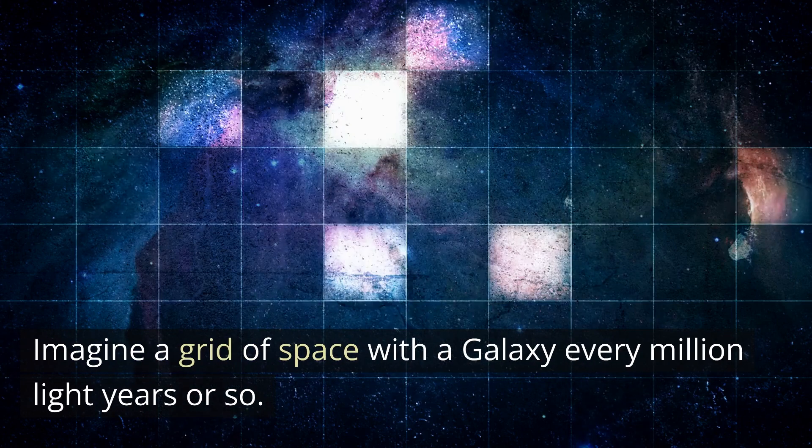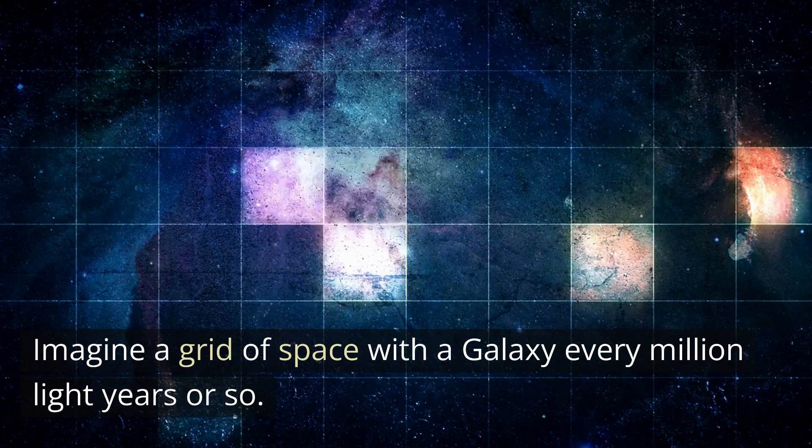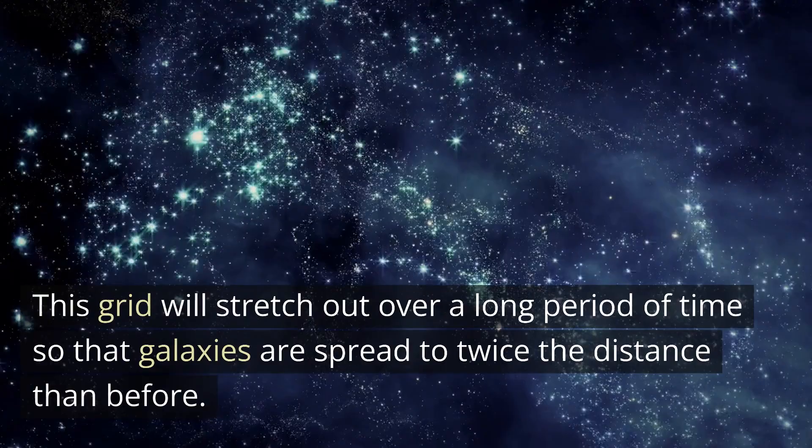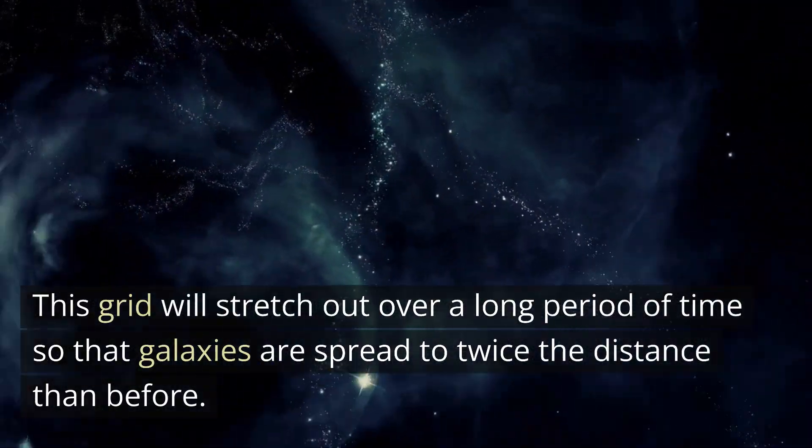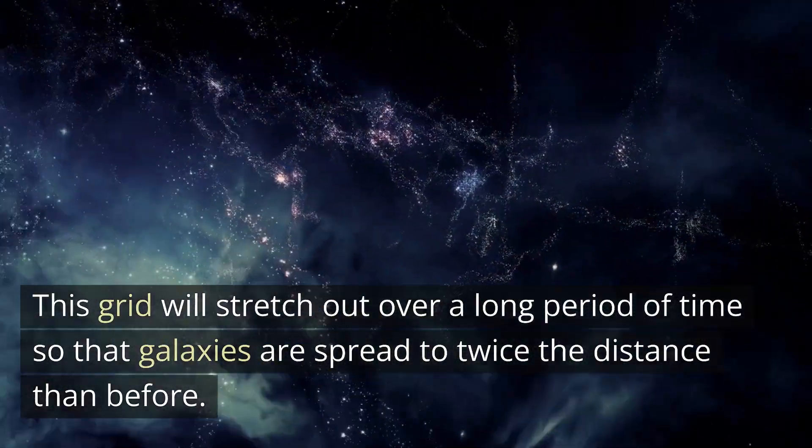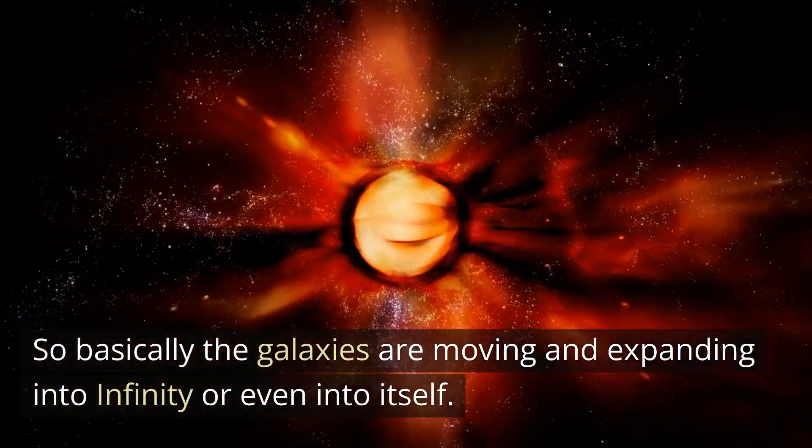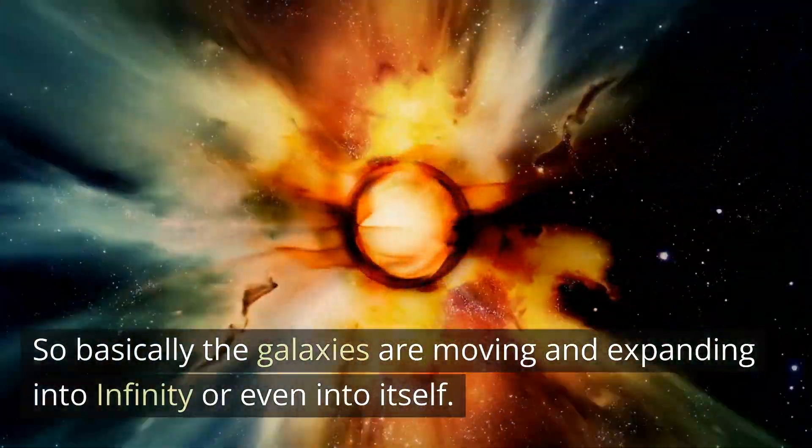Imagine a grid of space with a galaxy every million light years or so. This grid will stretch out over a long period of time so that galaxies are spread to twice the distance than before. So basically the galaxies are moving and expanding into infinity or even into itself.